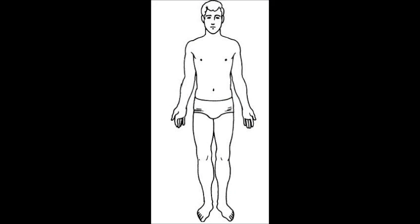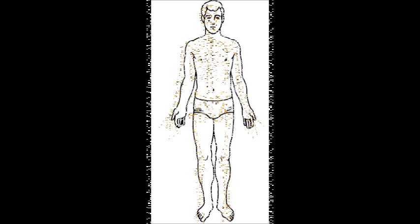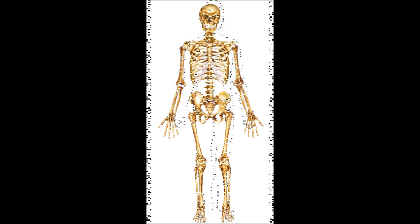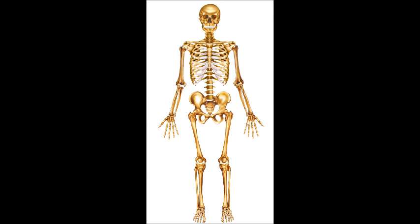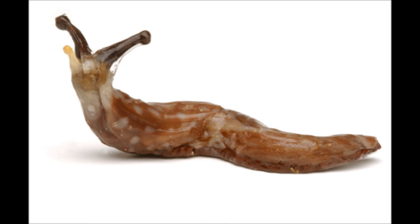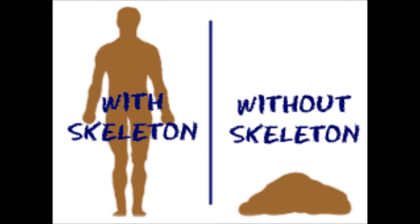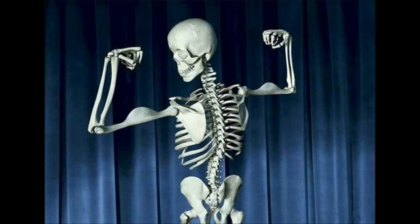How many bones do you have in your body? You have 206, which makes up about 20% of your body mass. But what would happen if we didn't have bones? Well, we would kind of look like slugs — we would just crawl around on the ground, we wouldn't have any definite shape or form, and we wouldn't be able to move around or do basic daily functions.